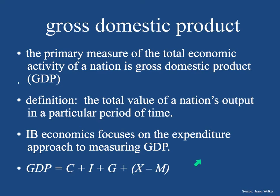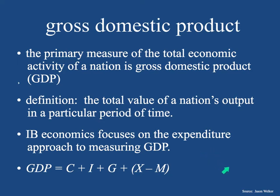The aggregate demand curve is a representation of all of the demand in a country. All of the demand in the country could be summed up by GDP, because GDP equals C — consumption — plus investment I, plus government spending G, plus X minus M, exports minus imports. This GDP calculation, C plus I plus G plus X minus M, equals GDP, and it is represented as the aggregate demand curve, because the aggregate demand curve is a collection of these four components.